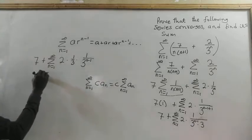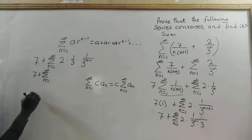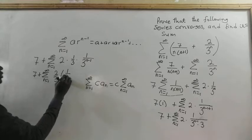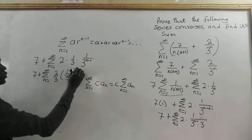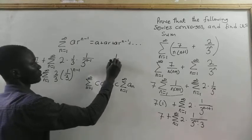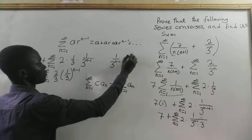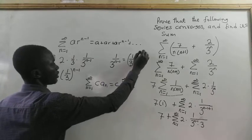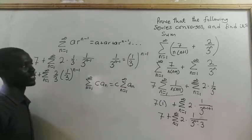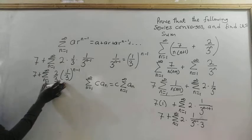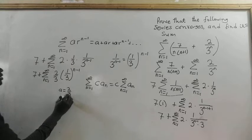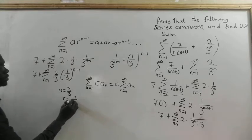So we have 7 plus summation from n equal to 1 to infinity of (2/3) times (1/3) to the power n minus 1. From the laws of exponents, (1/3) to the exponent n minus 1 is the same as (1/3) all to the power n minus 1. So here, putting this in the standard geometric series form, we have a equal to 2/3 and r equal to 1/3.